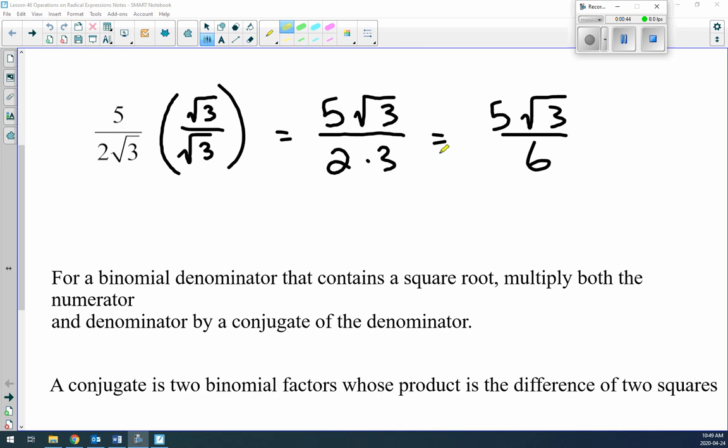So 5 over 2 root of 3 and 5 root of 3 over 6 are equivalent radicals. The only difference is we've rationalized the denominator.